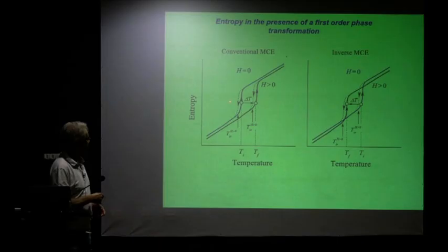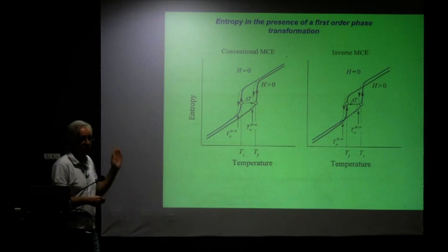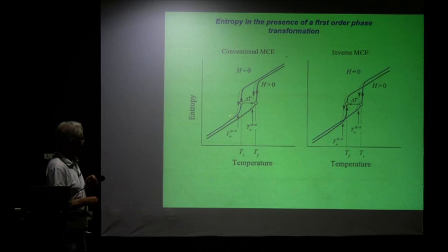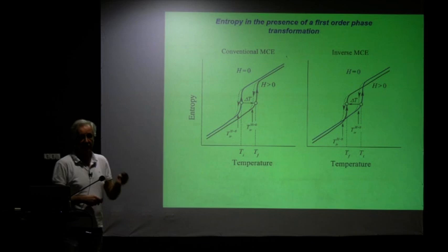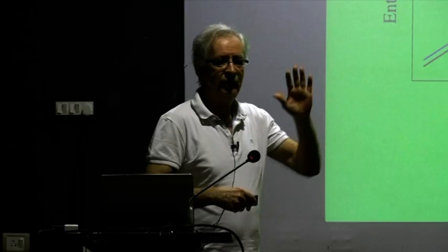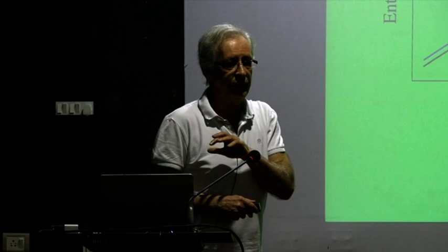We looked at how entropy looks schematically in the case of a magneto-structural transition — a first order transition with hysteresis. When we look at the temperature dependence of the magnetization and a hysteresis in the temperature, and then try to understand adiabatic processes in terms of isothermal processes, it becomes tricky. The way to study an adiabatic process like the adiabatic temperature change is to look at the entropy, because in an adiabatic process the entropy is always constant. So if you're at a value here, when you apply magnetic fields and remove them, you're always on a constant entropy line.